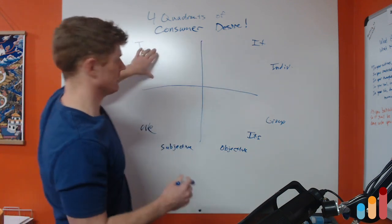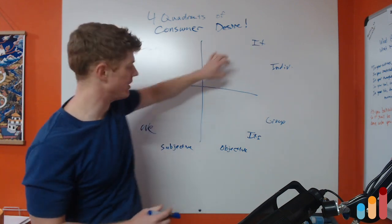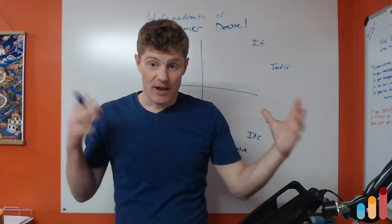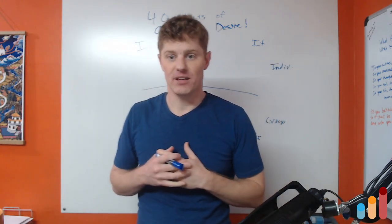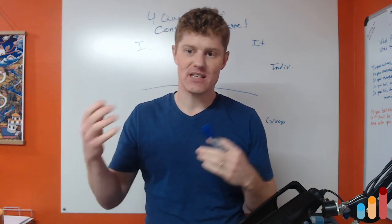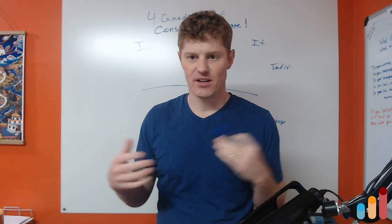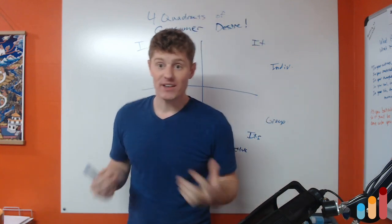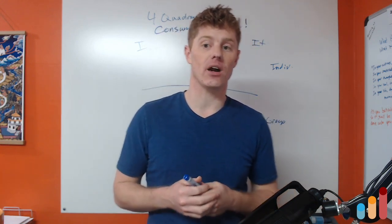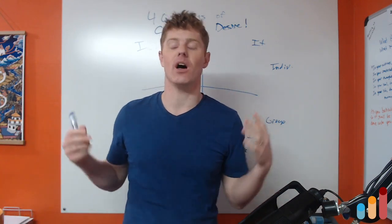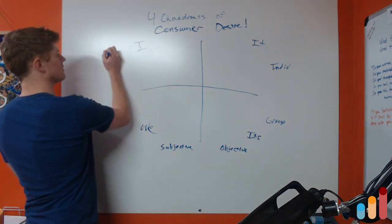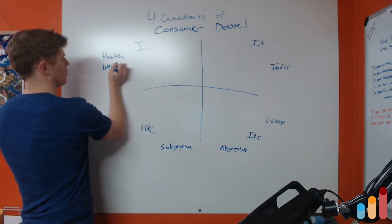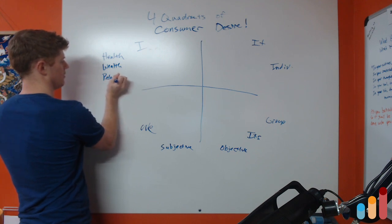This is the individual level, individual interior, individual exterior. This is the group or collective level, group exterior, group interior. And so everything, all of reality can be looked at from these different perspectives. There's the inside of me, there's the outside of me, there's the inside of the subjective experience of relationships, and then there's the objective physical experience of us relating in the world. What does this have to do with consumer desire? Well, three of the really big categories of consumer desire really are recognized as health, wealth, and relationships.